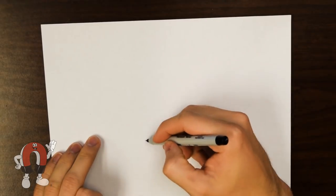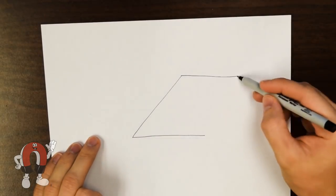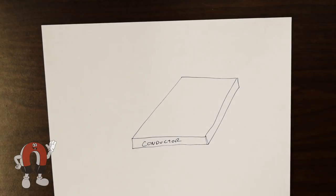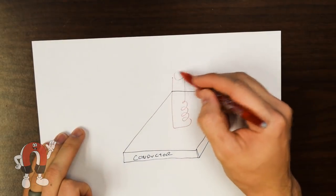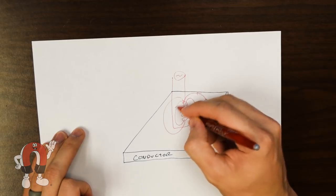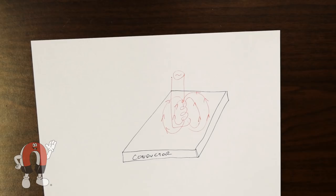This inductive stovetop uses eddy currents to heat up the pan. What are eddy currents? Basically, eddy currents are loops of electrical current induced in a conductor by a changing magnetic field due to Faraday's law of induction.